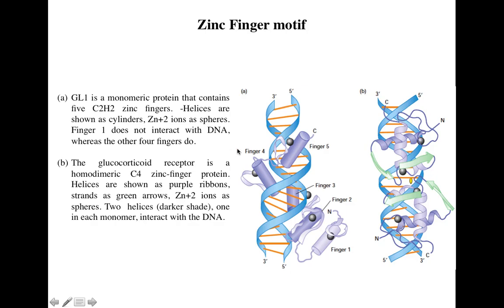GL1 is a monomeric protein consisting of one monomer with five helices — the cylinders here indicate helices and the black spheres indicate zinc ions. This protein has five C2H2 zinc fingers: finger one through finger five. With the exception of finger one, the other four fingers are interacting with the DNA in different regions, giving the protein stability and helping it firmly bind to the DNA.